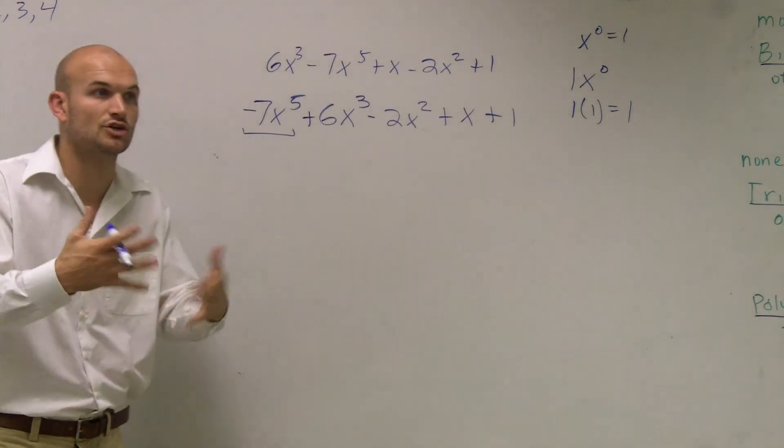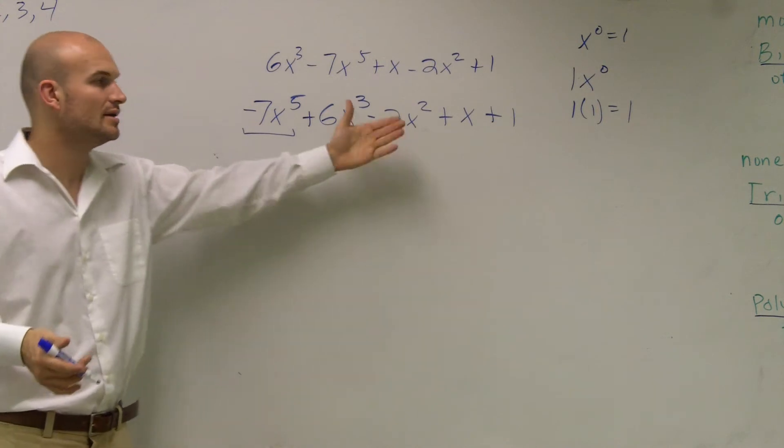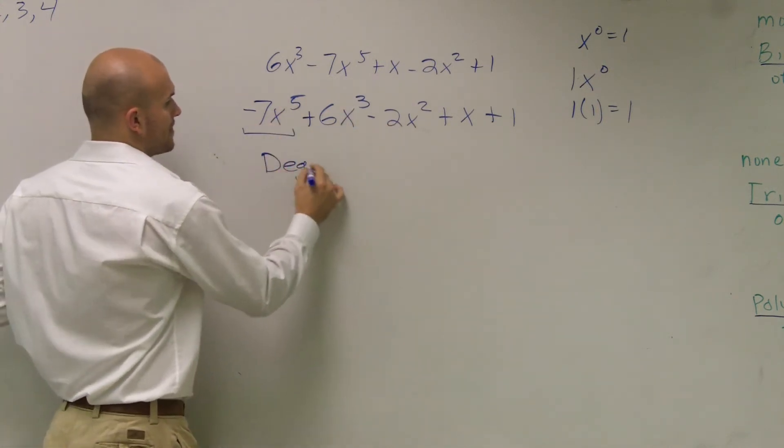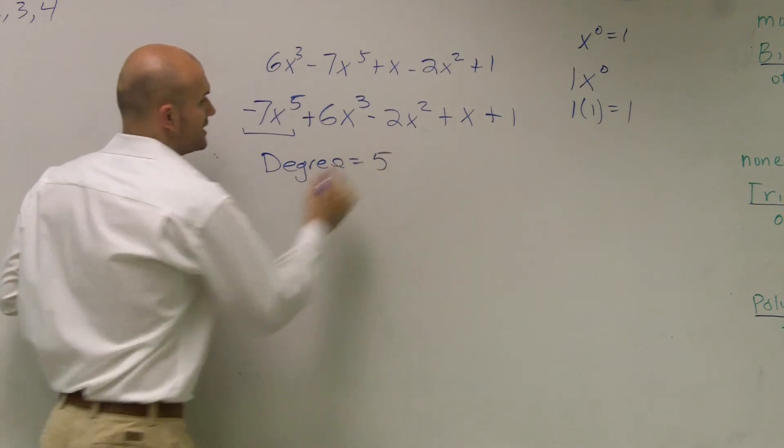So the largest exponent, or the degree of the whole polynomial, is that exponent of my leading term. So my degree is going to equal 5.